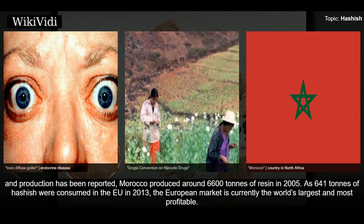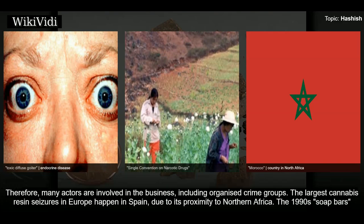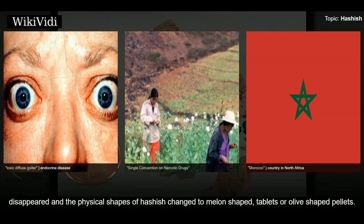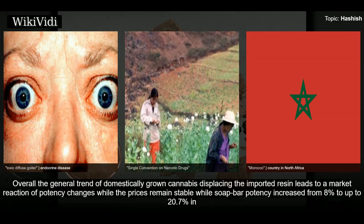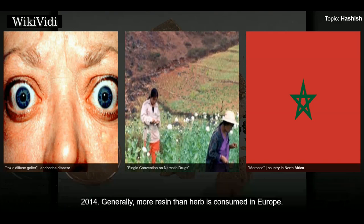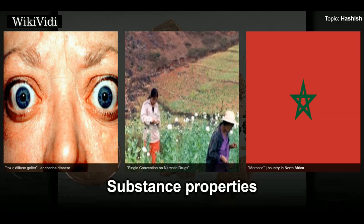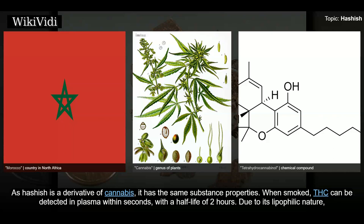The European market is currently the world's largest and most profitable, with many actors involved, including organized crime groups. The largest cannabis resin seizures in Europe happen in Spain due to its proximity to North Africa. The 1990s soap bars disappeared, and physical shapes of hashish changed to melon-shaped tablets or olive-shaped pellets. Overall, domestically grown cannabis displacing imported resin has led to potency changes: soap bar potency increased from 8% to up to 20.7% by 2014, while prices remain stable.